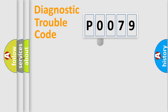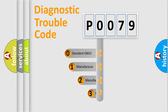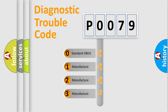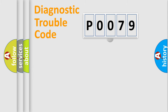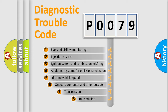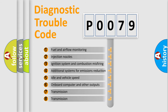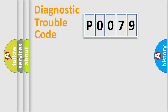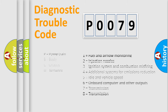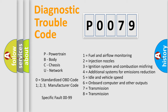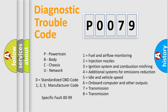This distribution is defined in the first character of the code. If the second character is expressed as zero, it is a standardized error. In the case of numbers 1, 2, or 3, it is a more specific car-manufacturer error. The third character specifies a subset of errors. This distribution is valid only for the standardized DTC code, and only the last two characters define the specific fault of the group.